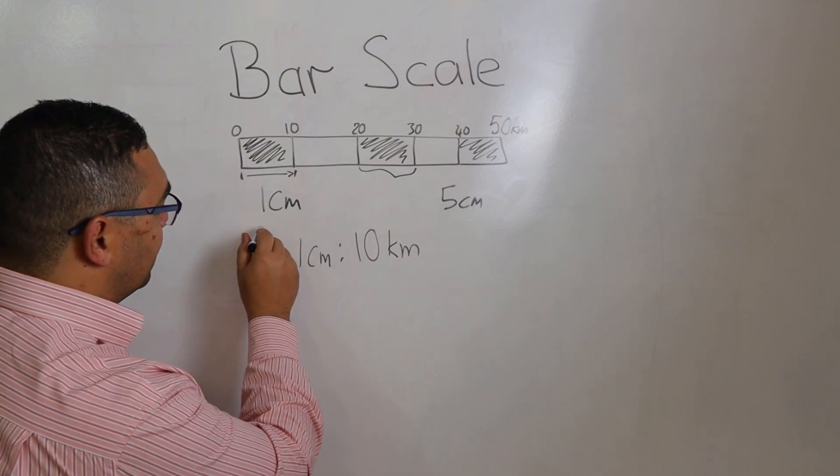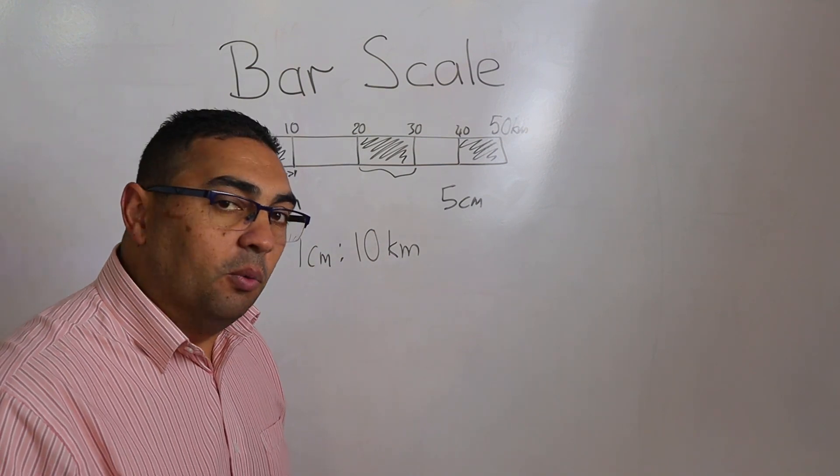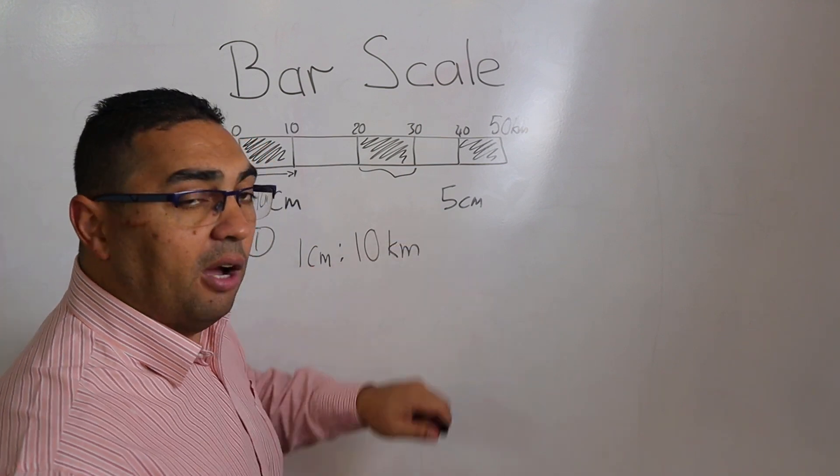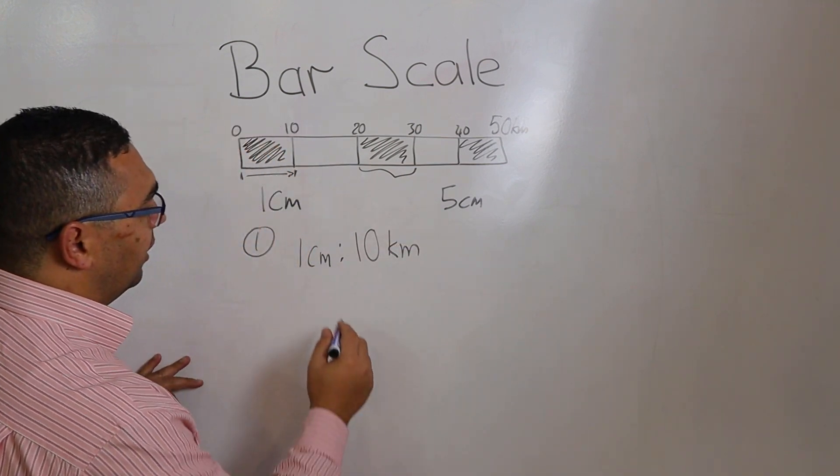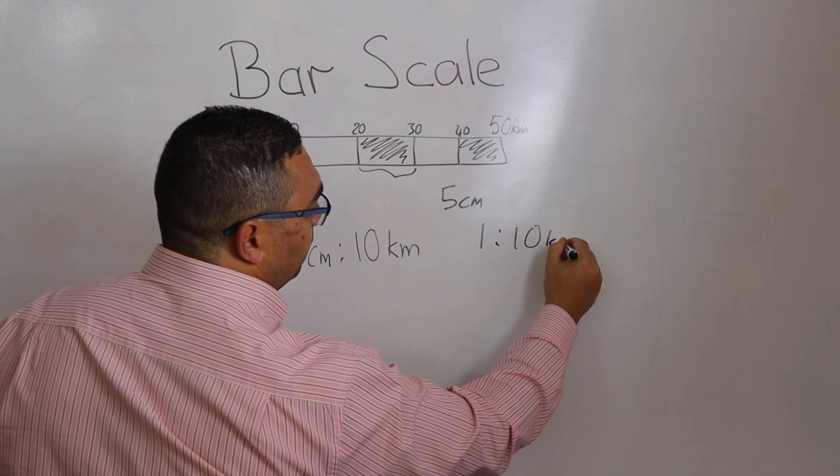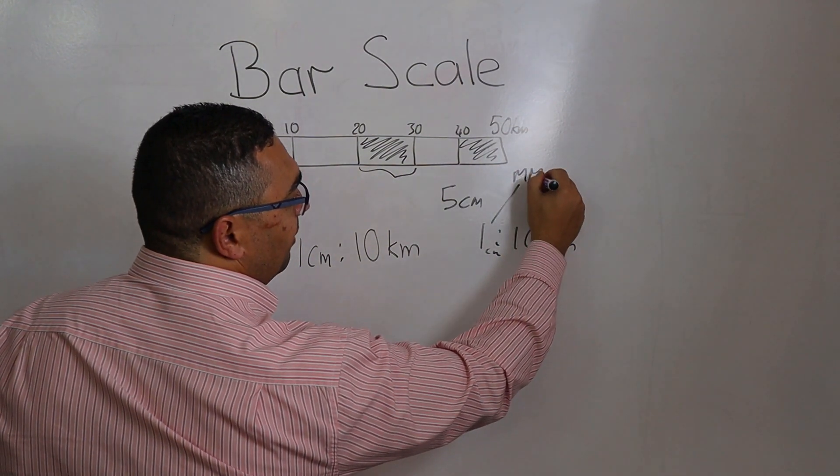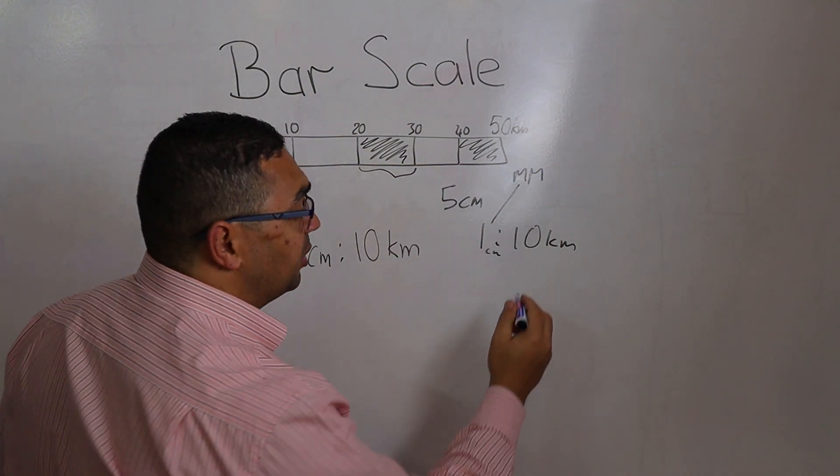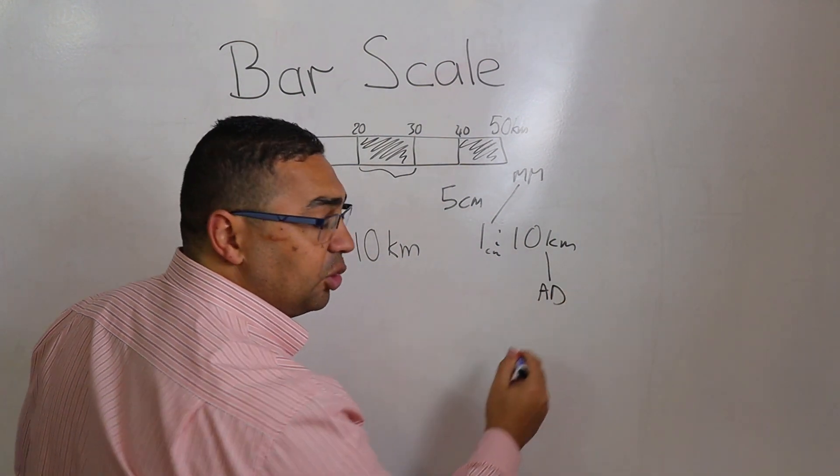So the first thing we need to do is what we've just done here. So that is step one. Once we've done that, we then bring our 5 centimeters down. Remember, when I look at this scale, this is my map measurement, and this is my actual distance.